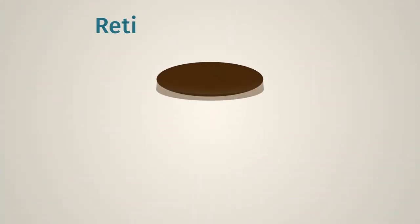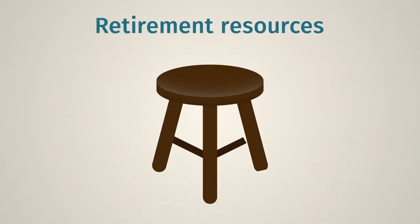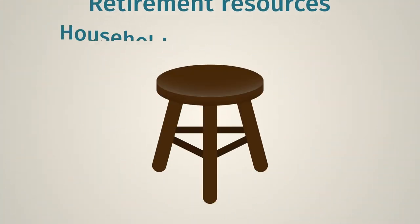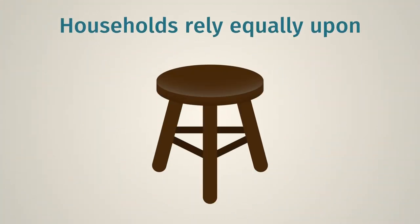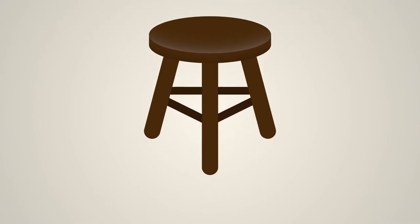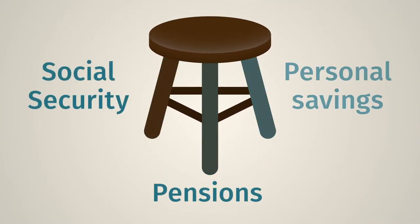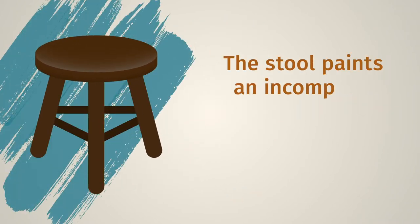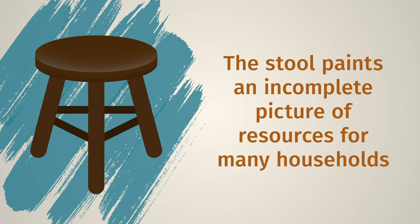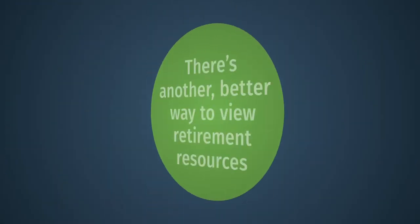Many have thought about retirement resources as a three-legged stool, where households rely equally upon Social Security, pensions, and personal savings during their golden years. But the stool paints an incomplete picture of resources for many households, and there's another better way to view retirement resources.